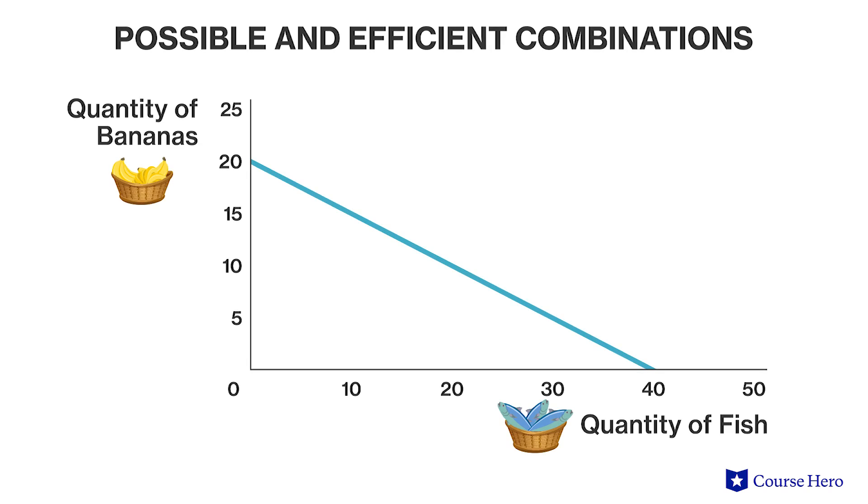The PPF shows all the possible production options, but it can also be used to show if a society is operating efficiently. Every combination of points that lie on or inside of Jerry's production possibility frontier is possible; however, not all of the points are efficient. Production points inside the frontier are not an efficient use of Jerry's time because he isn't using all of his resources. If Jerry gathers only a few bananas and a few fish, he could spend more time catching fish or collecting bananas in order to reach an efficient level of output — the key reason we say he's inefficient is he isn't using all of his time.